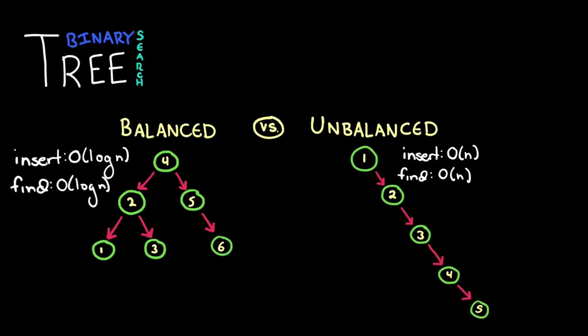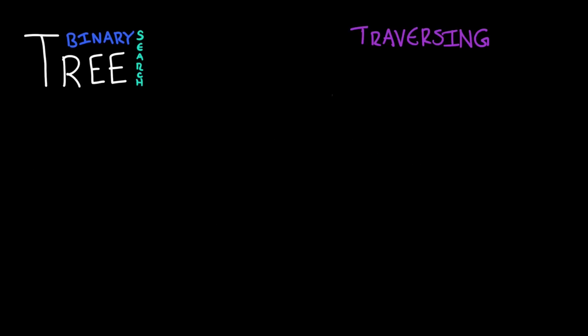The last operation to talk about is traversing or walking through a tree. So there's three common ways we walk through a tree. We can do an in-order traversal, a pre-order traversal, or a post-order traversal.